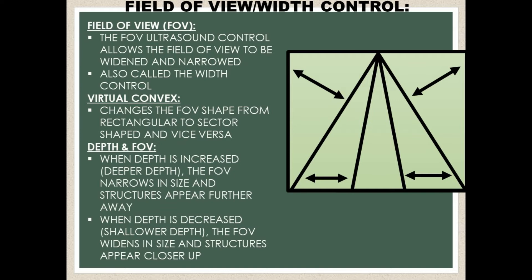It's important to note that depth and field of view go hand in hand — when one changes, the other changes. When depth is increased, meaning there's a deeper depth, the field of view narrows in size and structures appear further away on the ultrasound image. When depth is decreased, this is a shallower depth, the field of view widens in size and structures appear closer up.